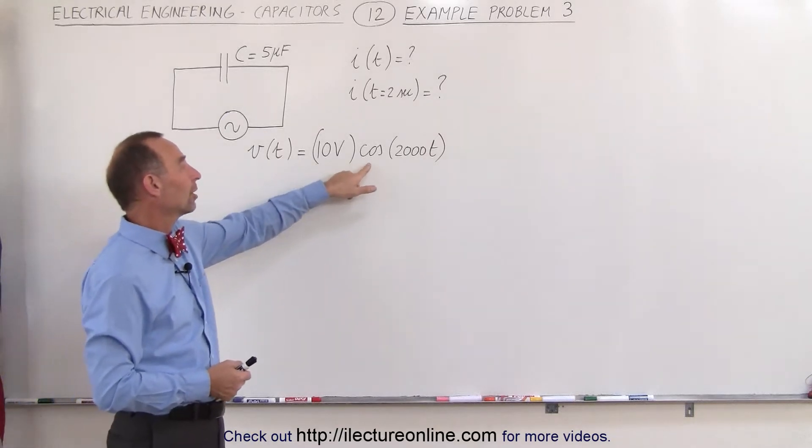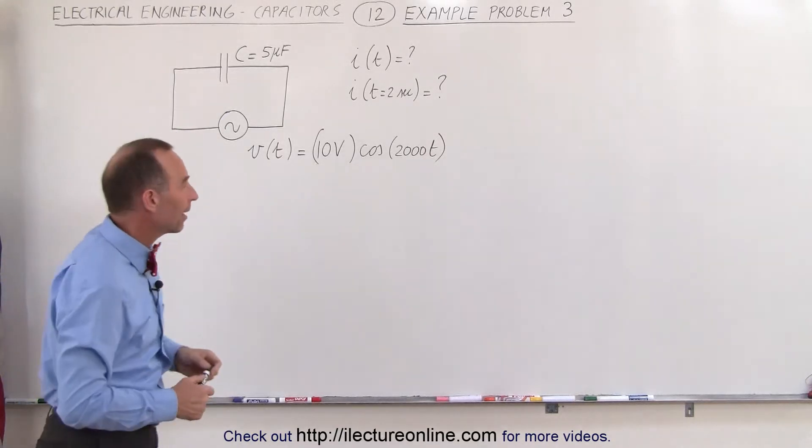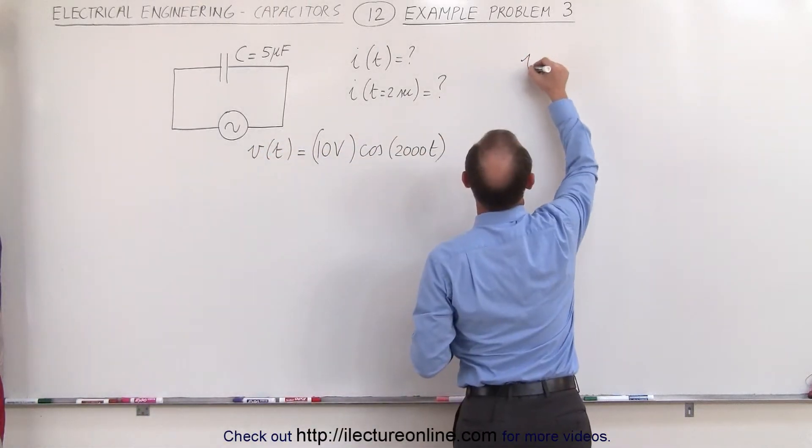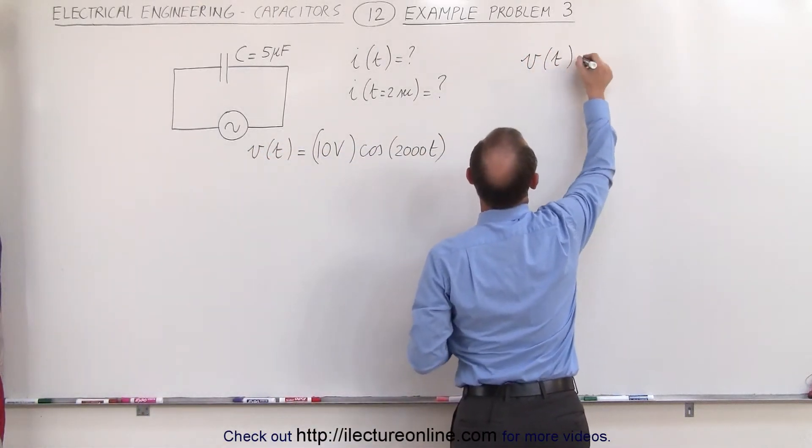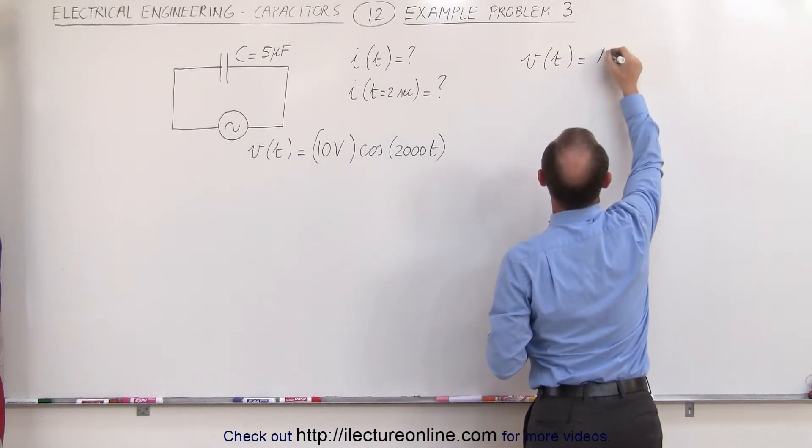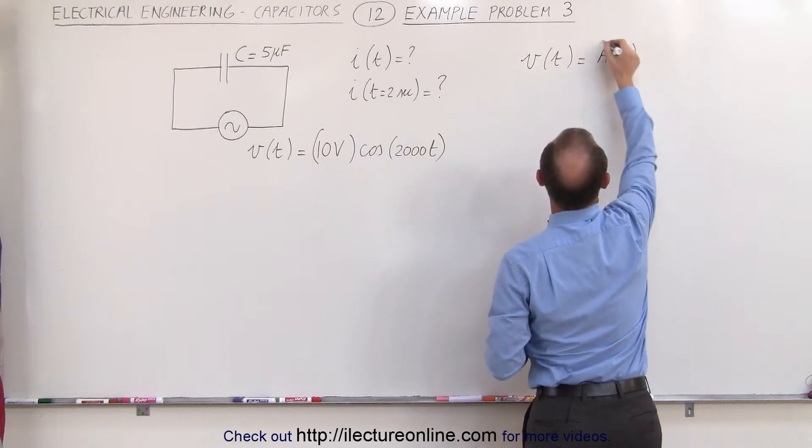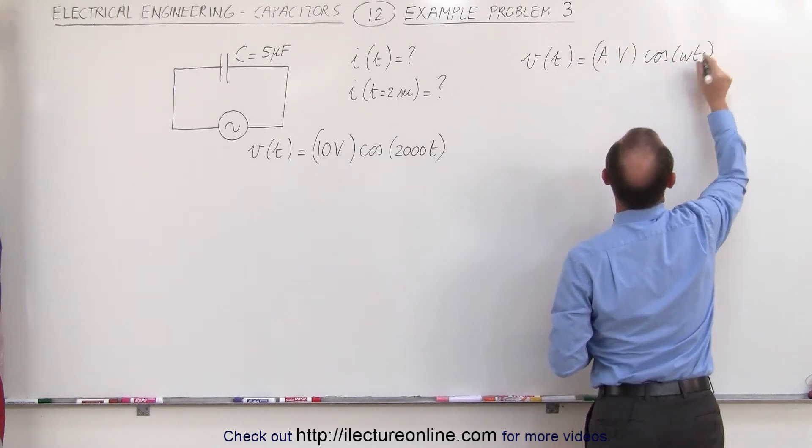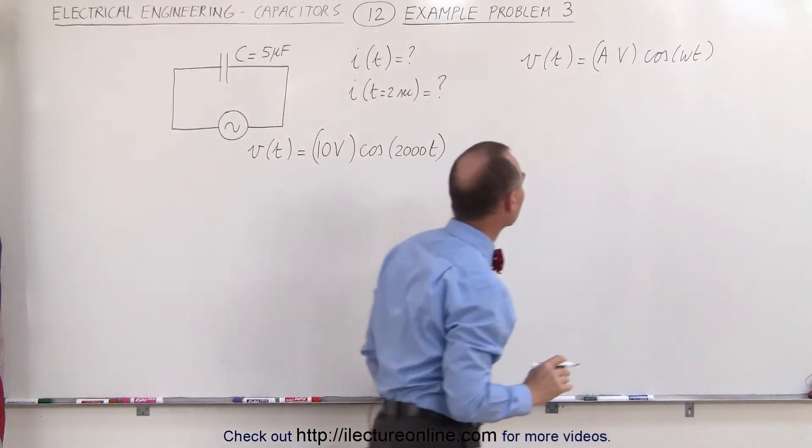It is equal to 10 volts times the cosine of 2000 times the time. Now remember this comes from the general equation where the voltage as a function of time is equal to some amplitude or some voltage, let's call it A, in terms of volts times the cosine of omega t, where omega is of course the angular frequency.